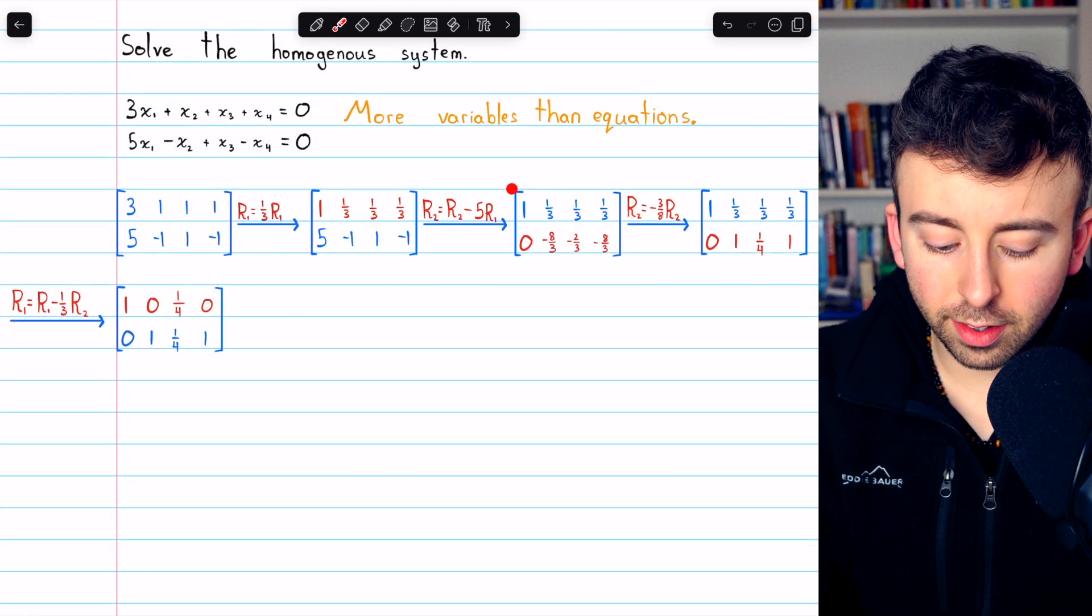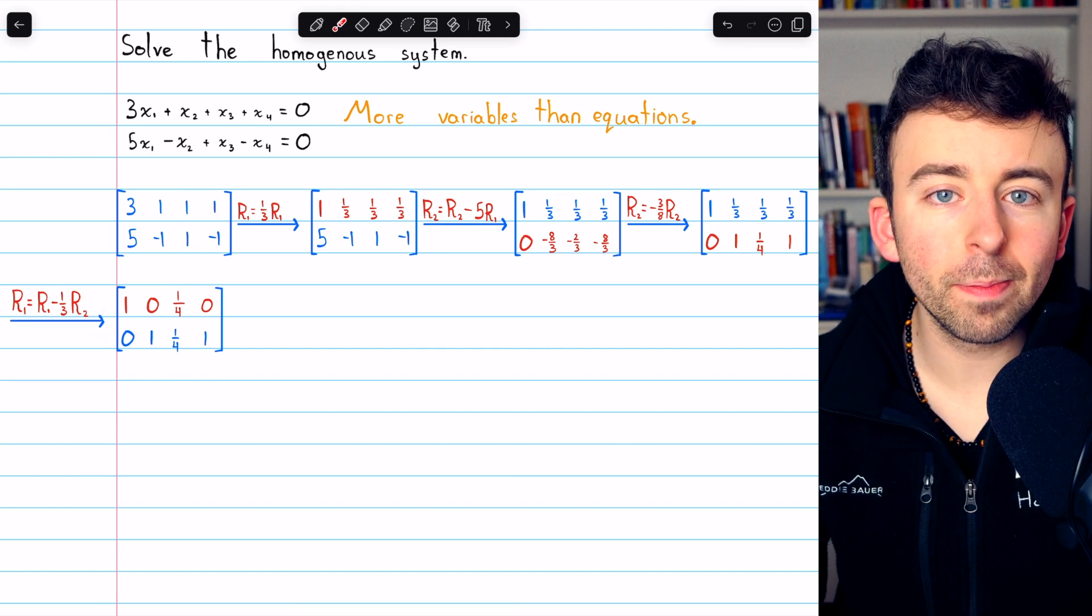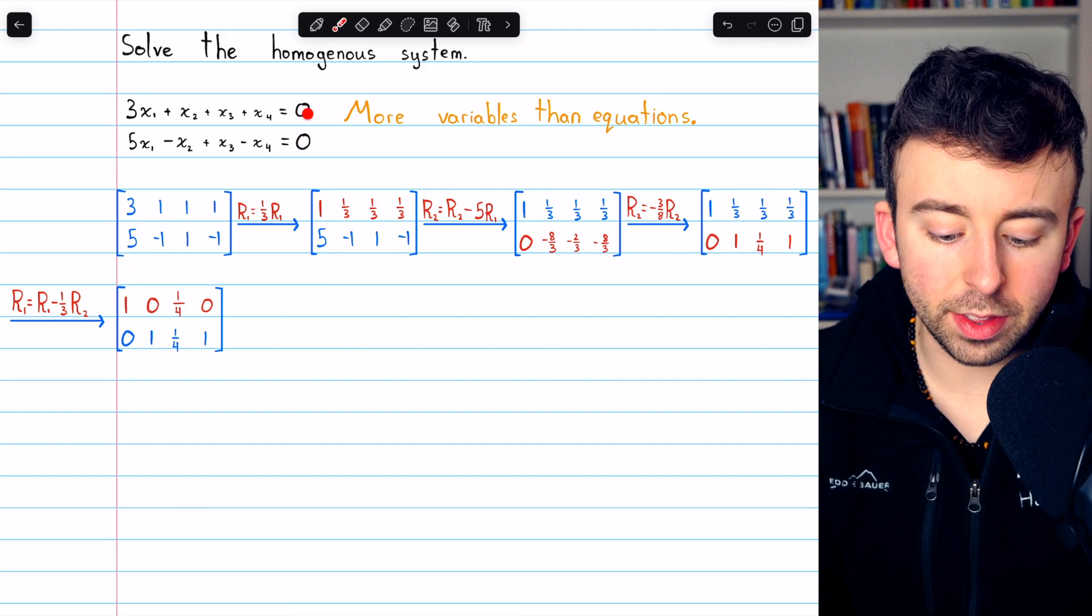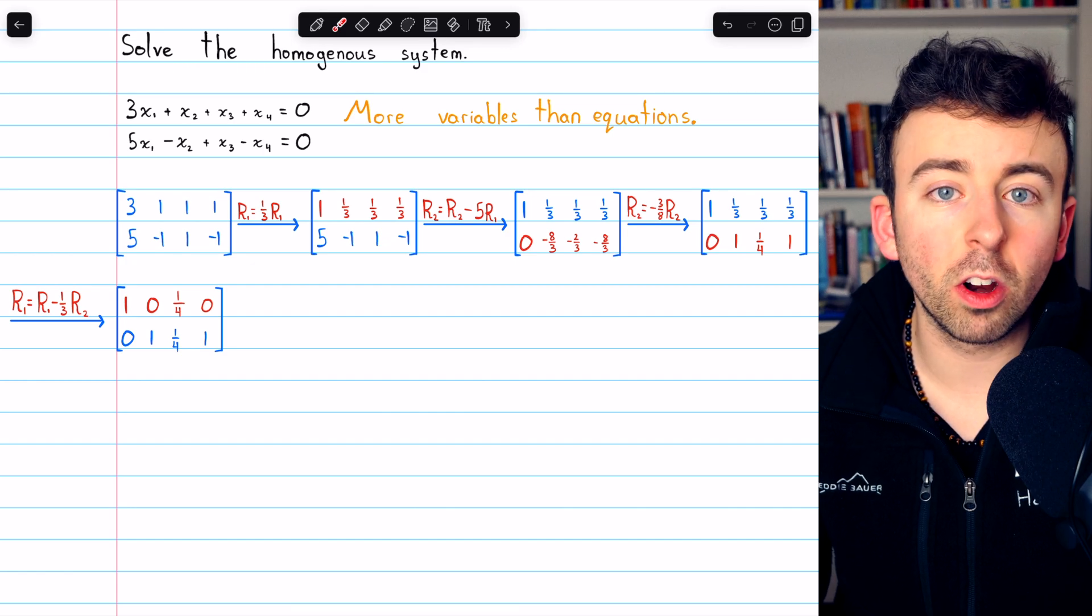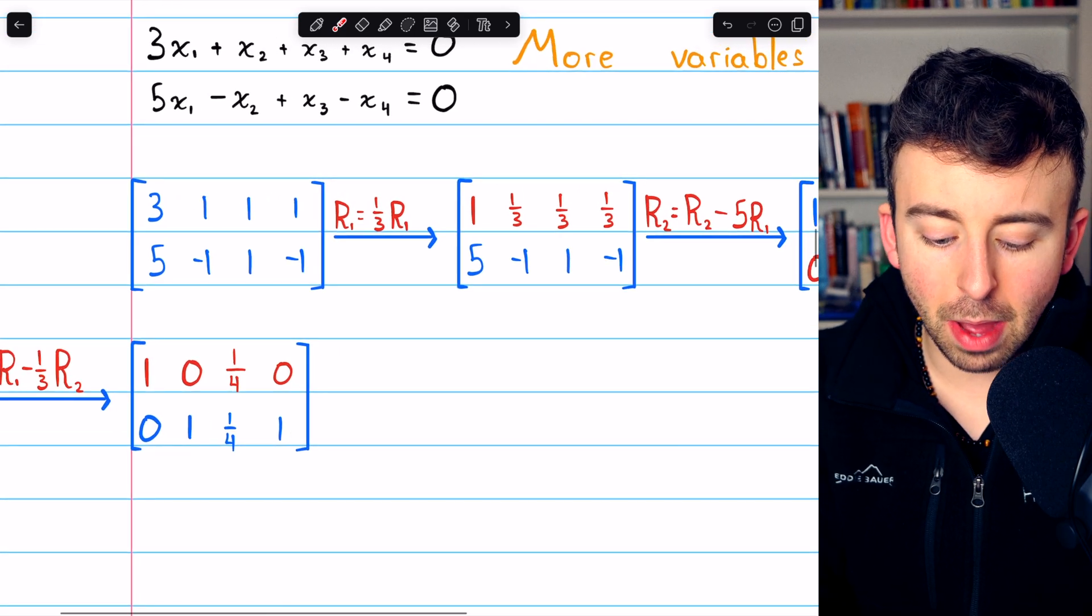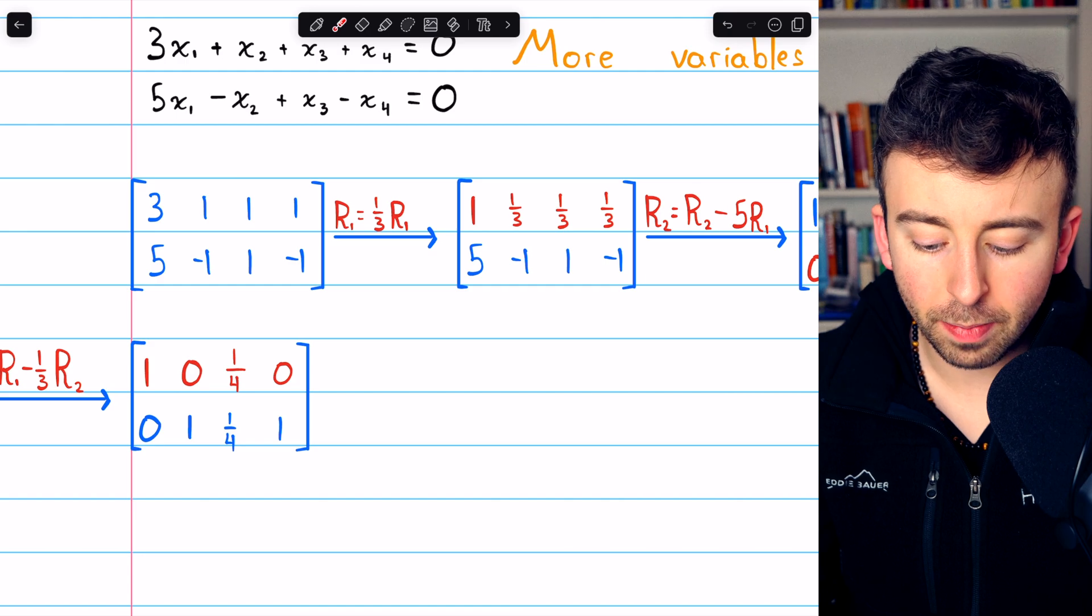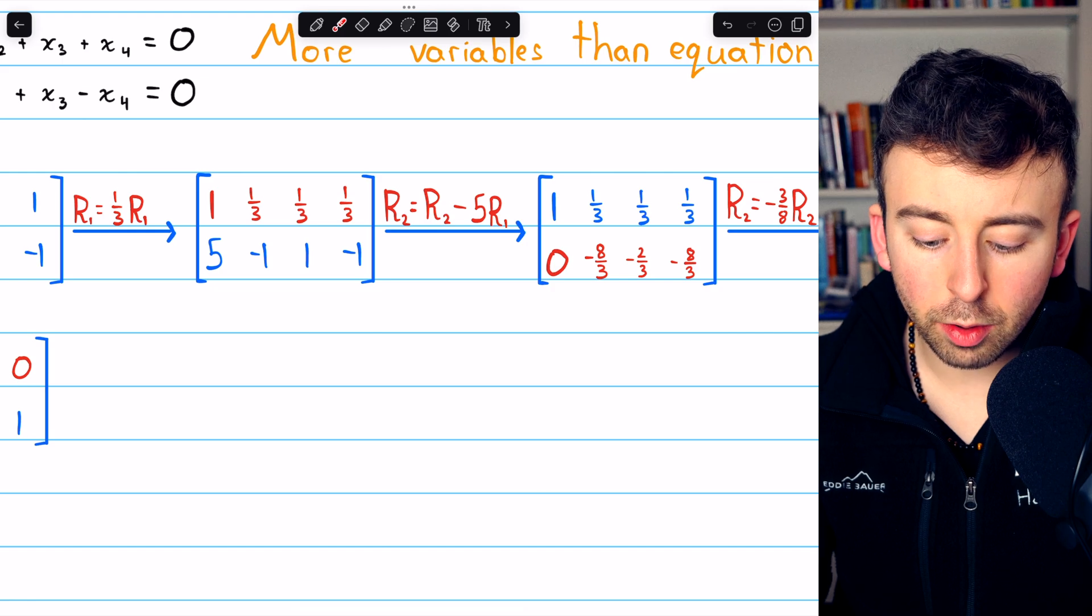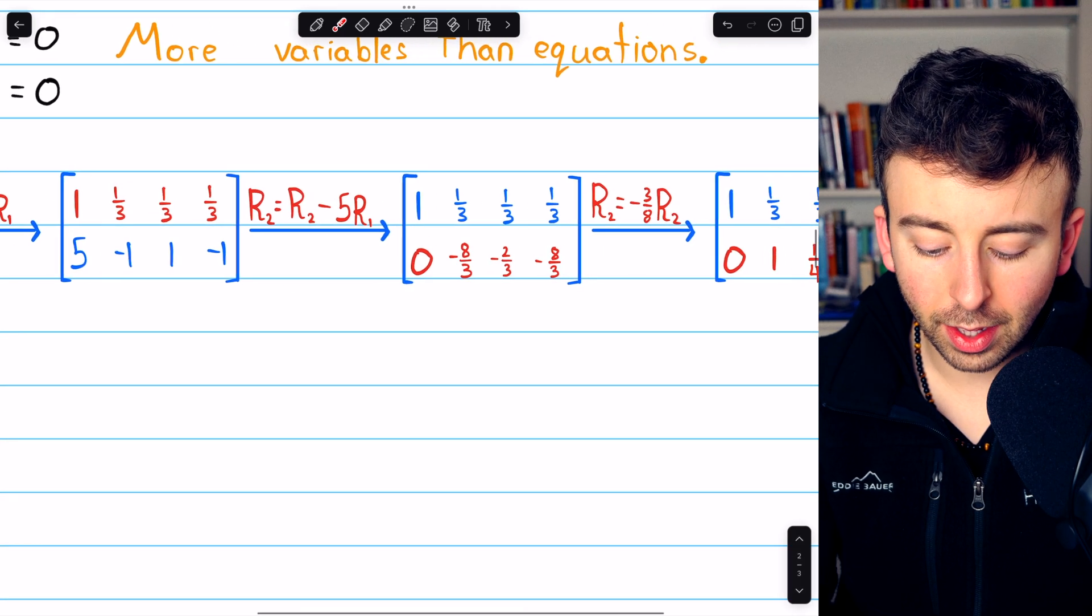Here are the row operations necessary to turn the coefficient matrix into reduced row echelon form. Again, this is a homogeneous system, so we don't have to store the constants in the matrix because no row operations are going to change the constants. So let's just walk through these operations. We begin by multiplying row one by a third to change the leading entry to one. Then we subtract five copies of row one from row two in order to get a zero below the leading one. That gets us here.